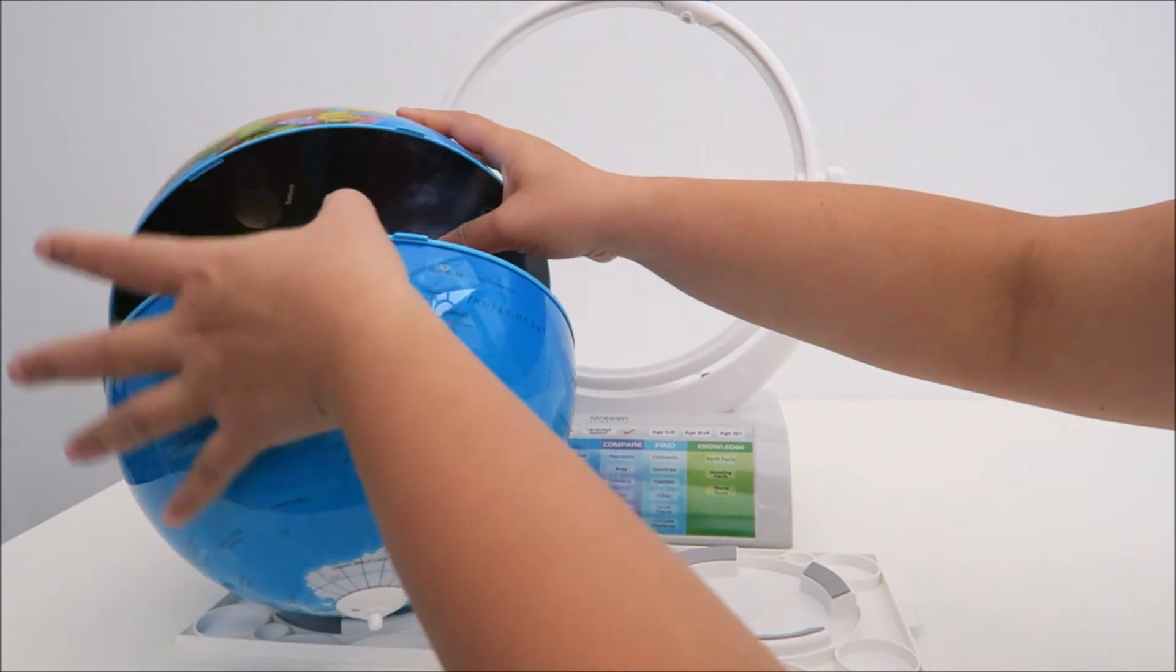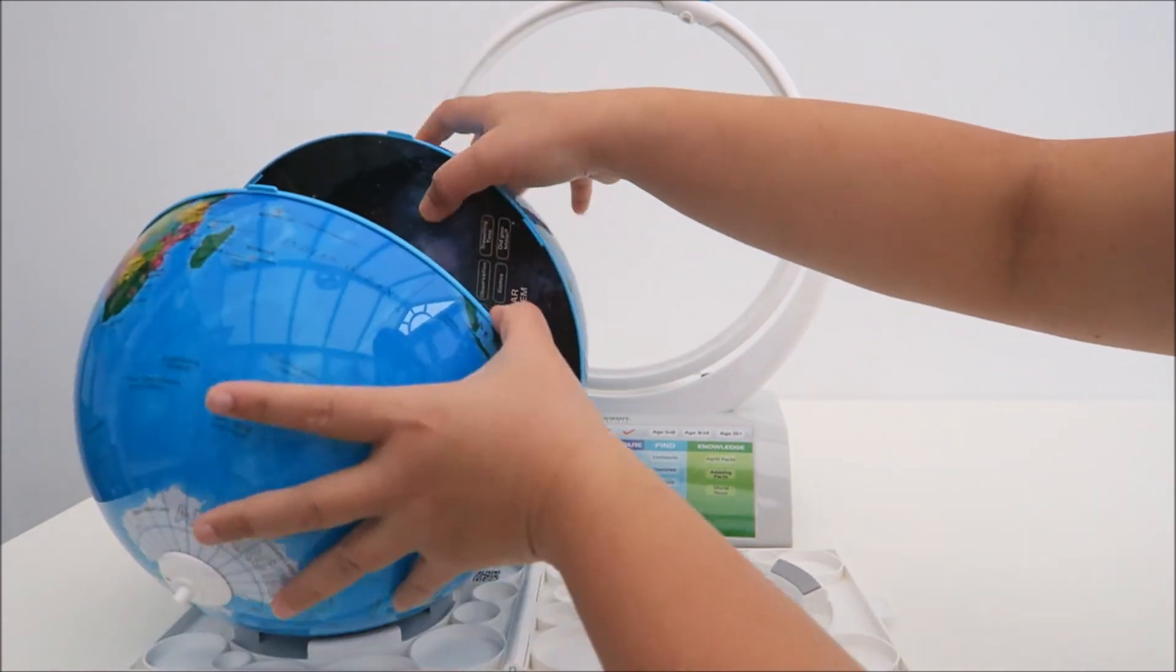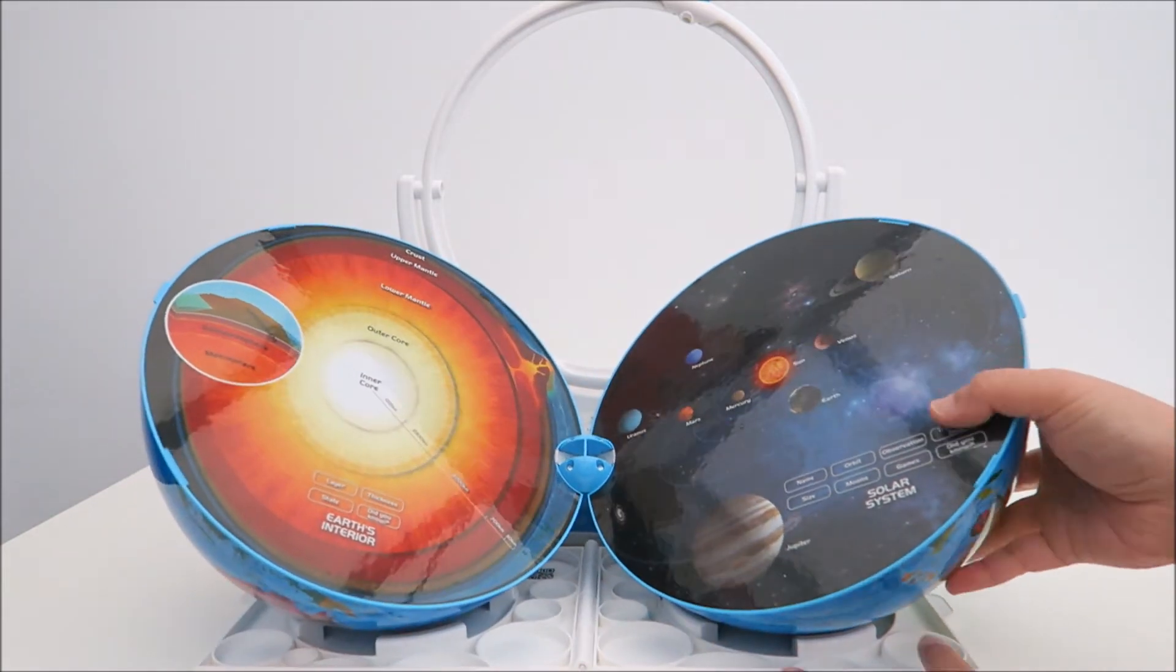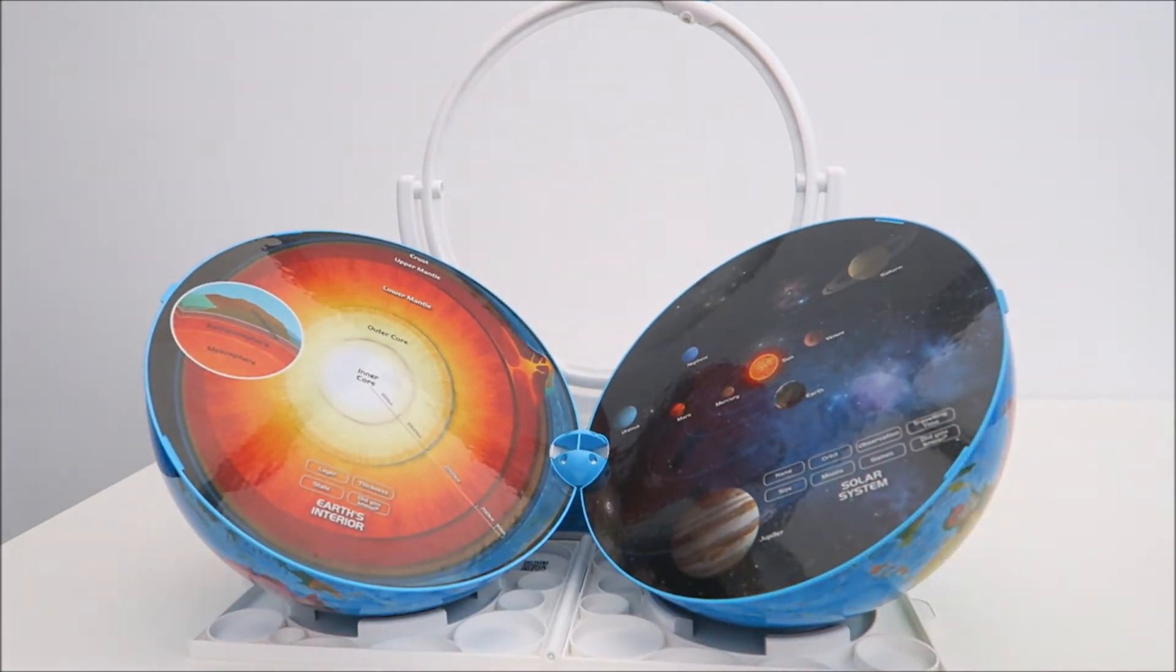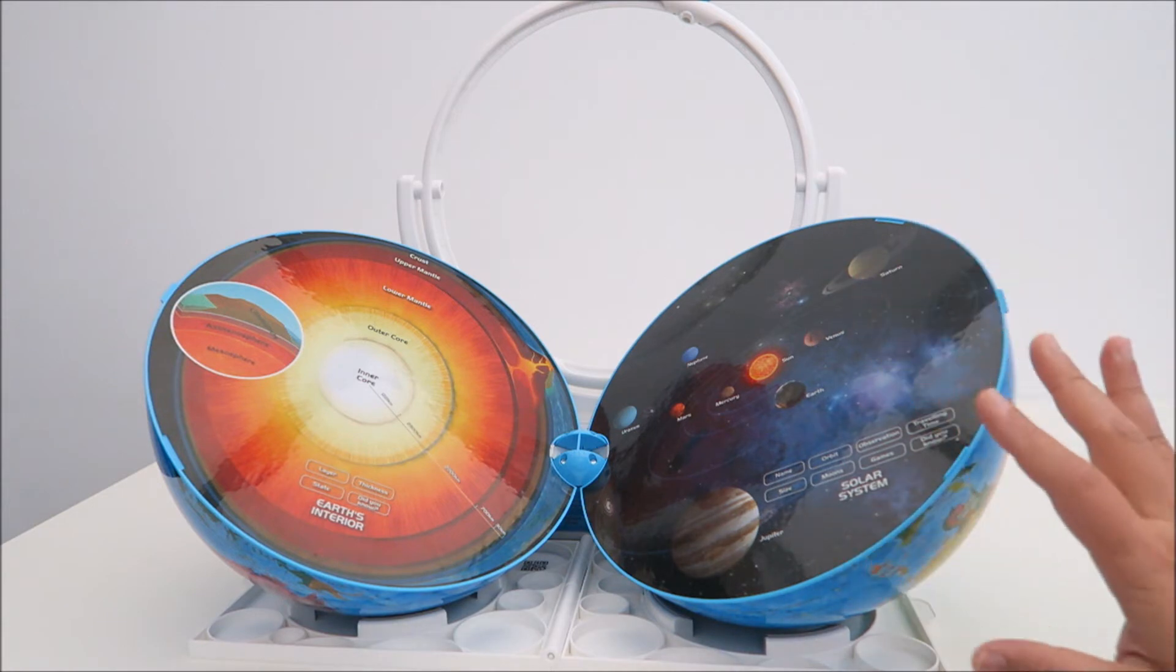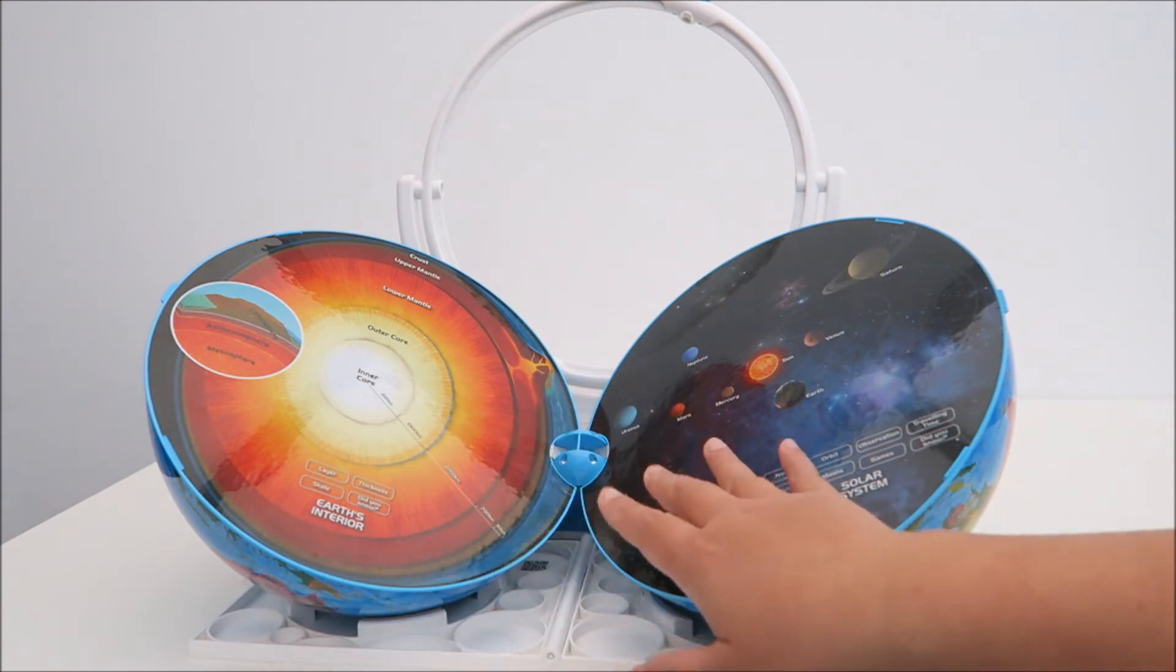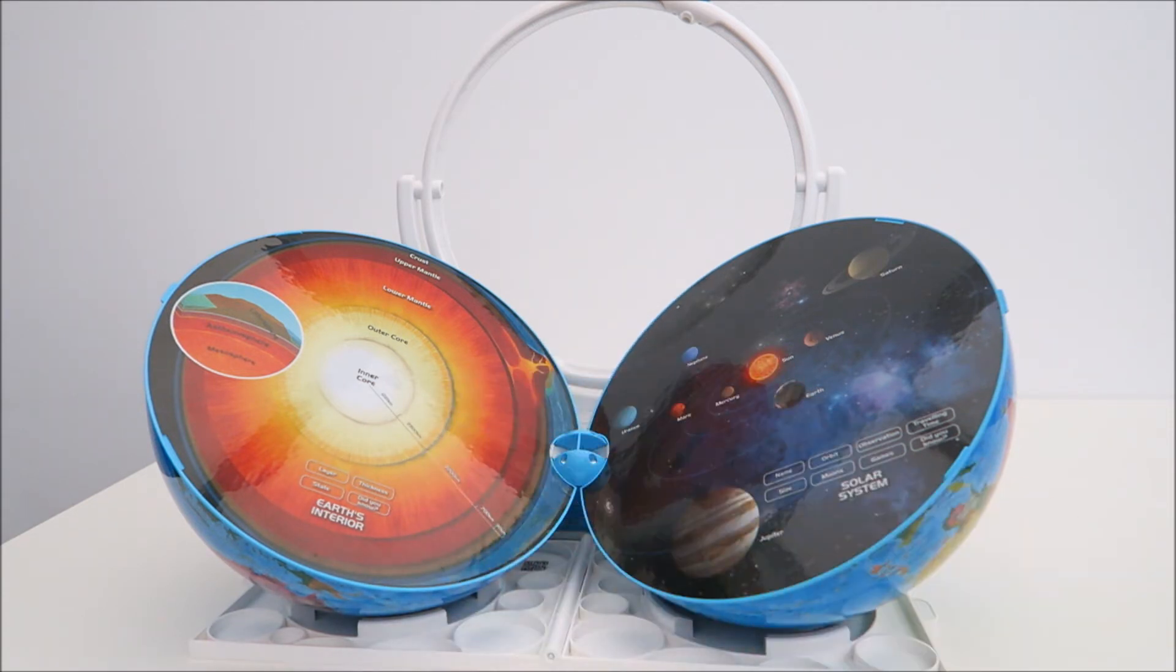So once you open it up, place it on the sliding drawer itself and you can see how cool this thing look. And obviously, this can also work with the smart learning pen. So just use your pen and you can learn about your solar system and the earth interior.